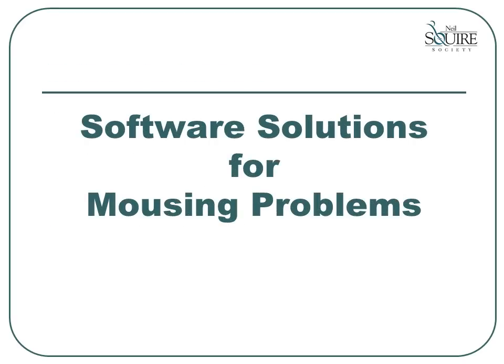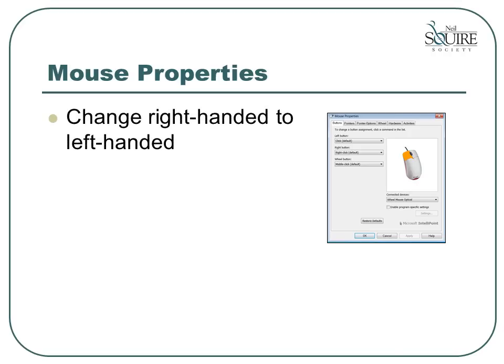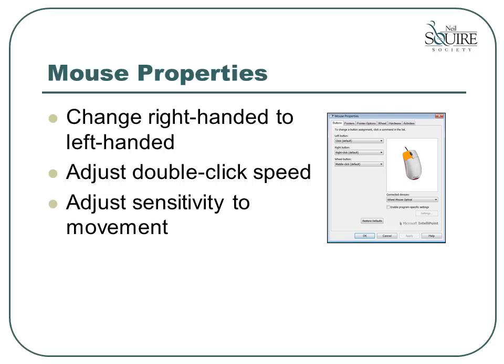Now let's look at a couple of the software solutions for mousing problems. First, let's examine the options available through the Windows mouse properties. Through the mouse properties dialog box, you can change from the standard right-handed mouse buttons to left-handed mouse buttons. Here you can adjust the double-click speed — this is the speed required for repeated clicks to be interpreted as a double click. Please note that if you slow down the double-click speed, it will not impact people who double click quickly. This is also where you can adjust the movement of the mouse to match your hand movement. If the mouse is zooming around the screen out of control, slow the mouse speed down; if it feels heavy and sluggish, speed it up. You want the mouse movement to feel natural and controlled. All of these options are built into the Windows operating system.